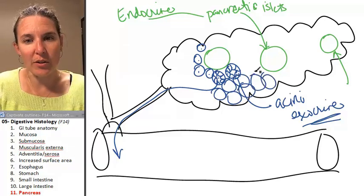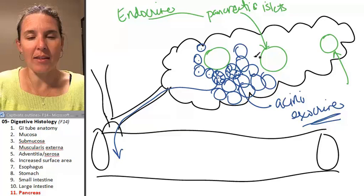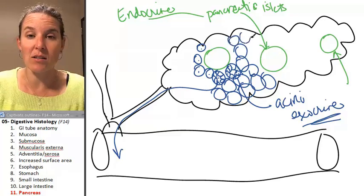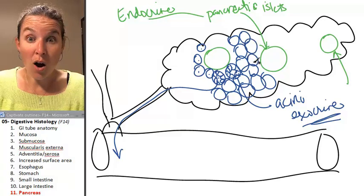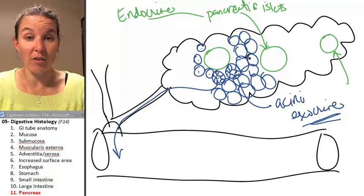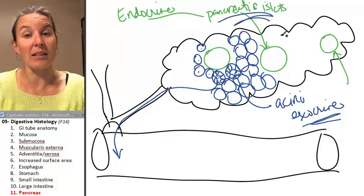Most of the pancreas, I think it's like 95% of all pancreatic cells, I can't remember the exact number, are exocrine cells. And a very small number of them are actually endocrine cells found in the pancreatic islets.